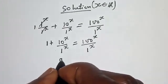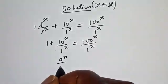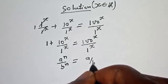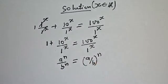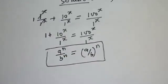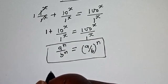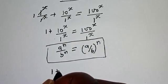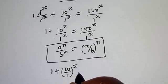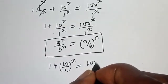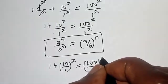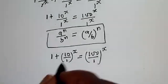Take note that if you have a raised to power n over b raised to power n, this is equal to (a/b) raised to the power n. Applying this rule, we have 1 plus (10/1) to the power of s is equal to (100/1) to the power of s.